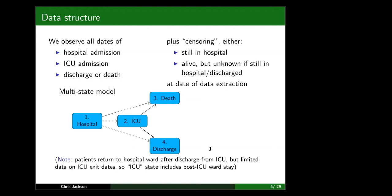People can die or be discharged from hospital from either the hospital state or the ICU state. People don't get sent home straight from intensive care, but there was limited data on dates when people were discharged from ICU, so we merged the ICU state with a post-ICU ward stay. So state two covers everything that happens after someone's been admitted to ICU. The dataset gives us all the dates of events of interest — hospital admission, ICU admission — within a certain length of follow-up up to the date of data extraction.